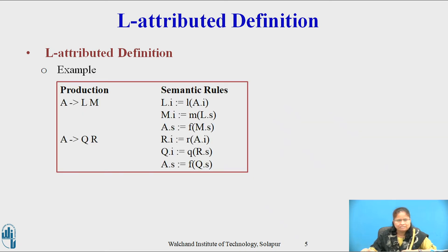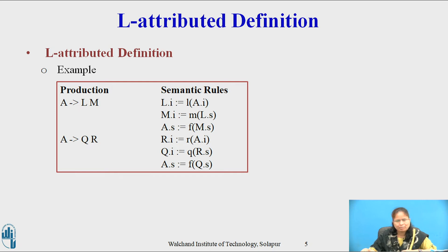Example: consider the production A → LM. The semantic rules associated with the production are: L.i = f(A.i), M.i = g(L.s), and A.s = f(M.s), which satisfy all the properties of an L-Attributed Definition.